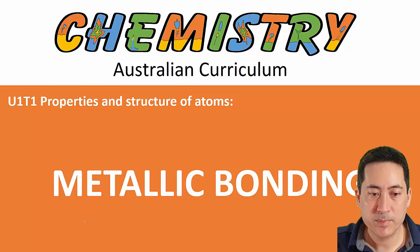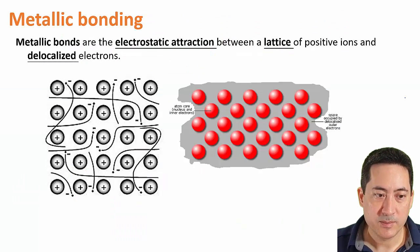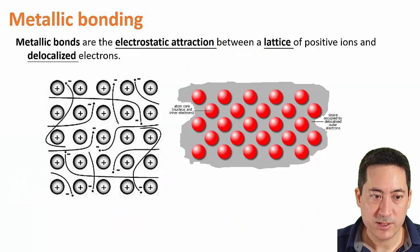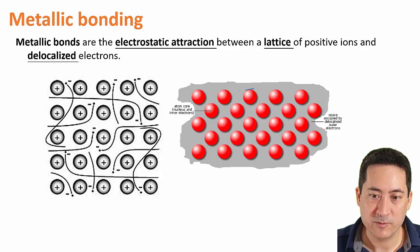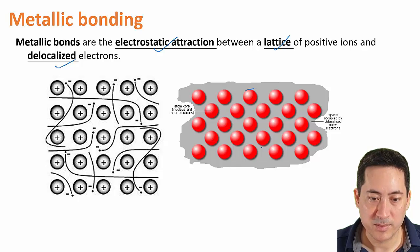Just quickly moving on to metallic bonding now. So metallic bond, I would just memorize this definition. Metallic bonds are the electrostatic attraction between a lattice of positive ions and delocalized electrons. I've underlined keywords that should get you marks. And the relevance of this, you really need to go to the properties video to understand how that affects the properties of metals compared to ionic compounds or molecular compounds.